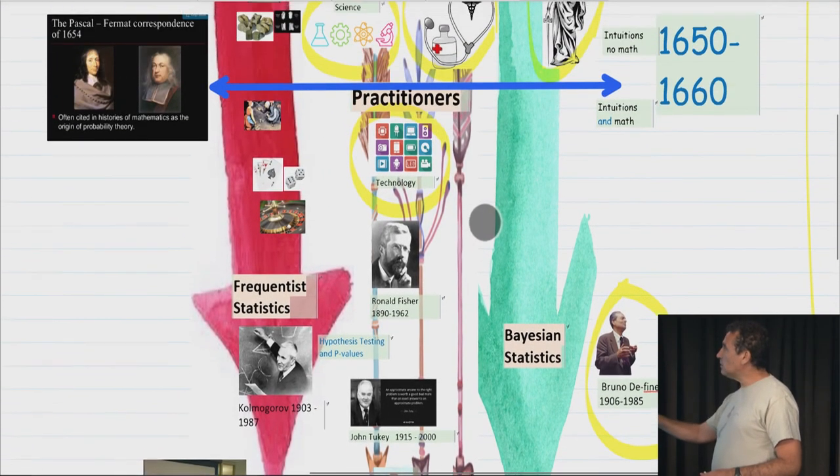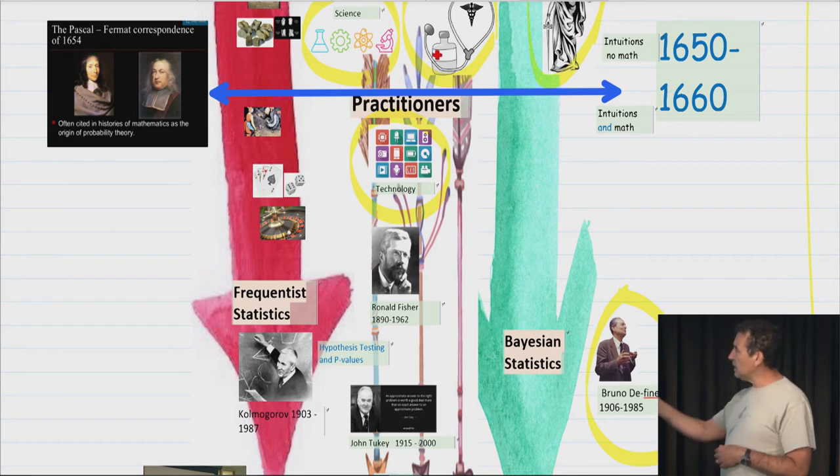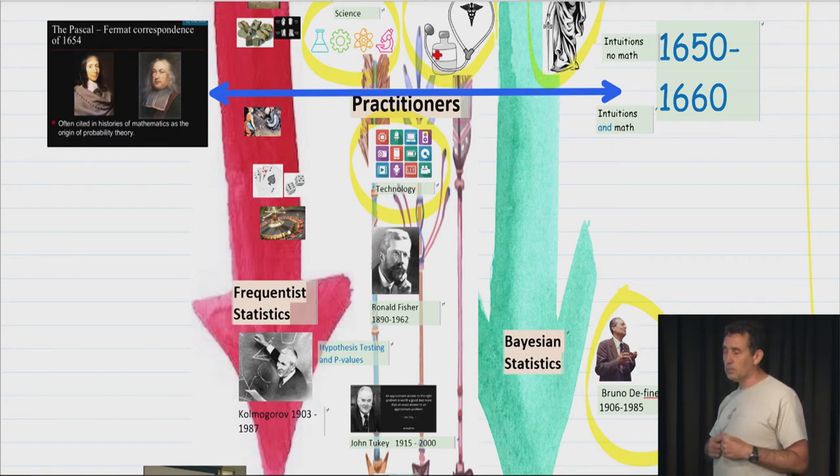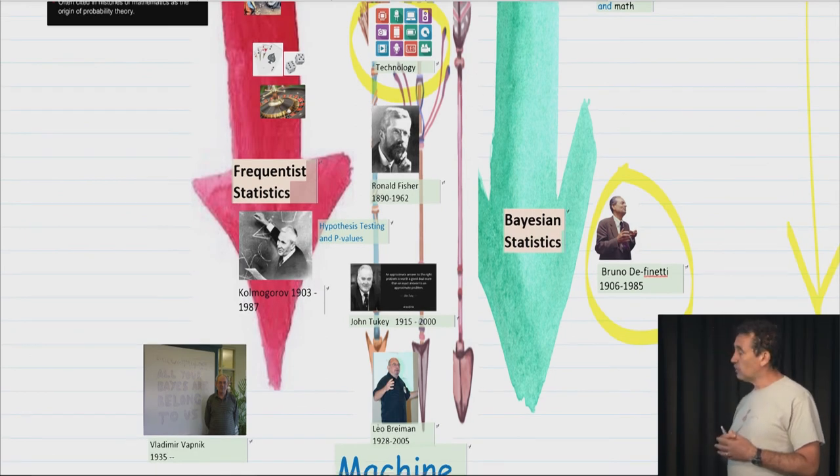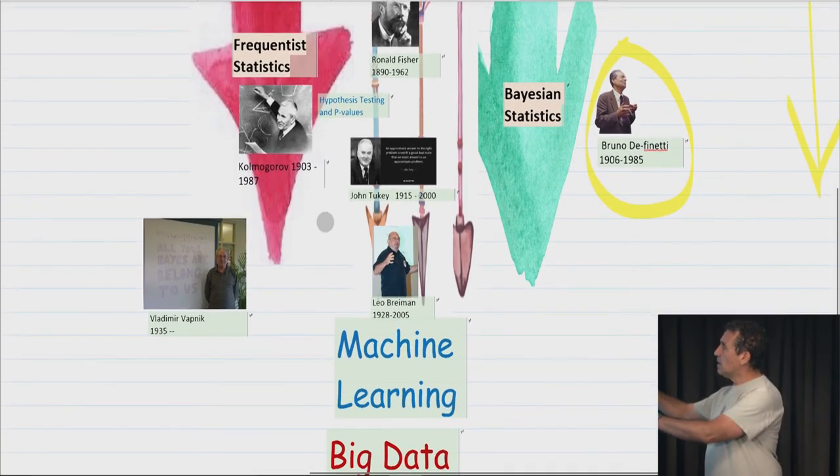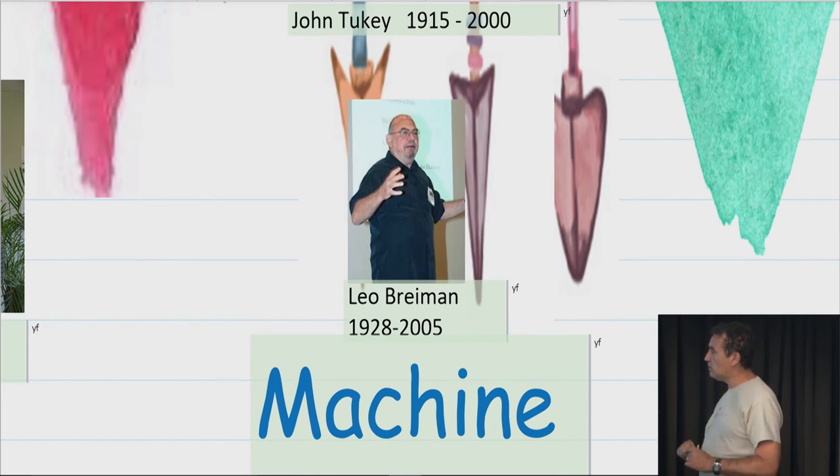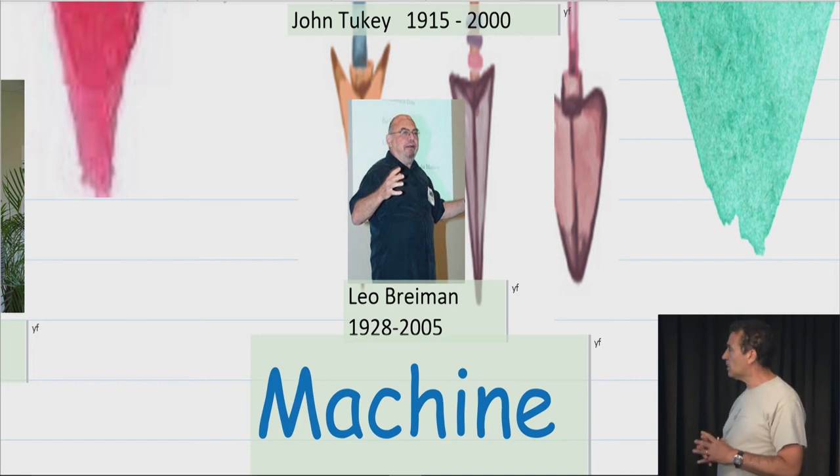But then what develops over time is people that are statistics practitioners, people that actually use probability and statistics in order to solve real-world problems. And I draw them in the middle here, the practitioners, because they are, in general, not dogmatic to one side or the other. They would use Bayesian statistics when it's appropriate, frequentist statistics when it's appropriate, and other heuristics when that's appropriate. The father of those methods is Ronald Fisher, who has brought statistics to the sciences and also to the social sciences. And then more recent ones are John Tukey, and even more recent is Leo Breiman, the inventor of bagging and cart and other important algorithms.